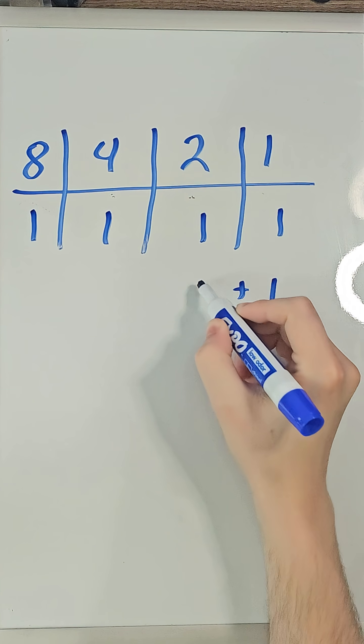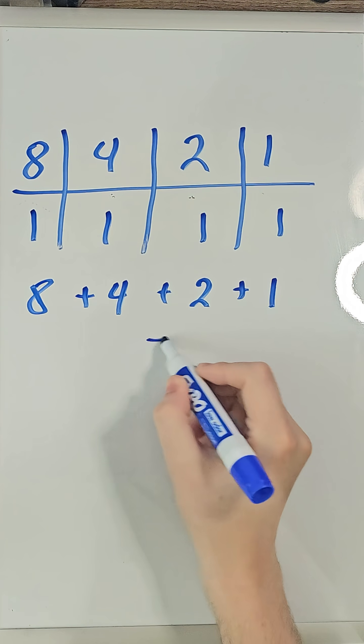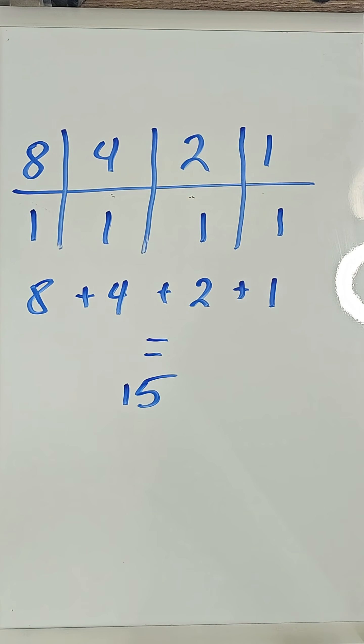What about 1111? Everything is turned on, so if we count this all up, we get 15. But how can we get a negative number out of this?